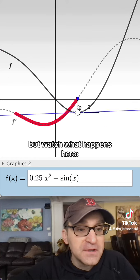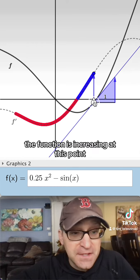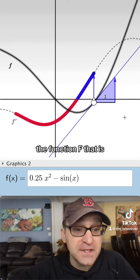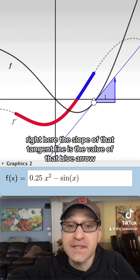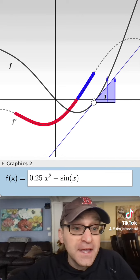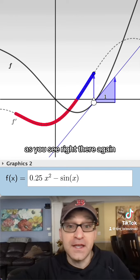But watch what happens here. Now the derivative is positive. The function is increasing at this point. The function f, that is. And if you look at this, right here, the slope of that tangent line is the value of that blue arrow and it is the output of the derivative as you see right there. Again,